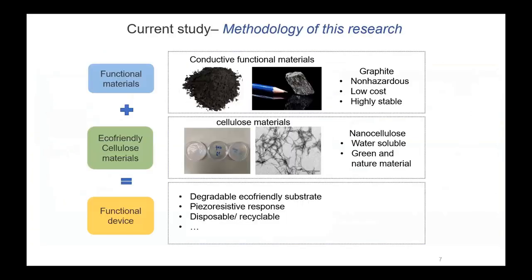Our objective and methodology of this research is shown in this schematic diagram. The key idea is to combine the functional materials, which is the graphite in this study, with the cellulose materials, which is the cellulose nanofiber, to synthesize a composite material that exhibits piezoresistive performance via a proper synthetic process. Graphite is a very stable and eco-friendly carbon-based material that is low-cost and non-hazardous to the environment.